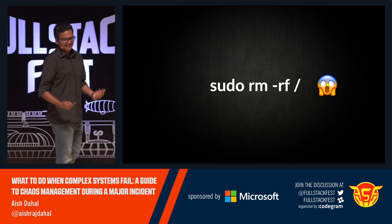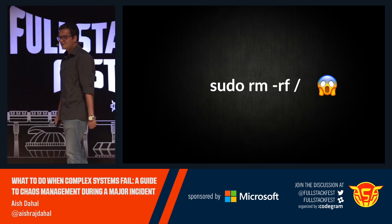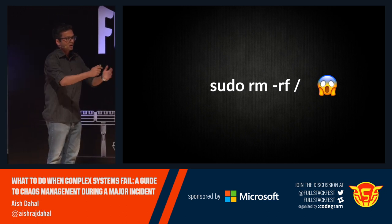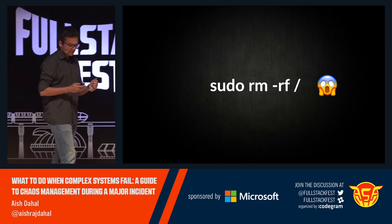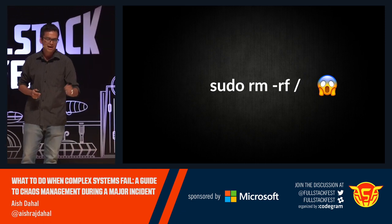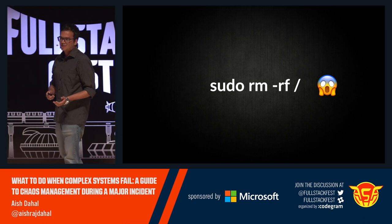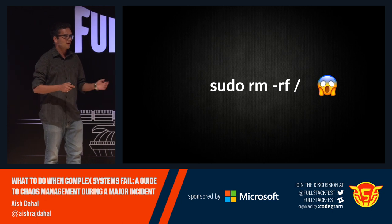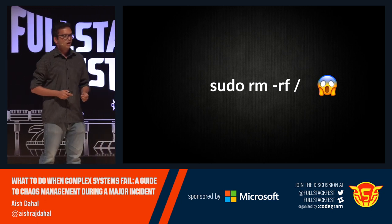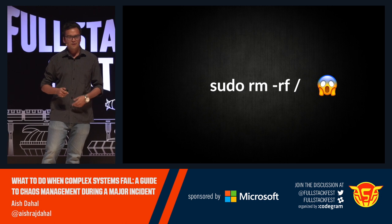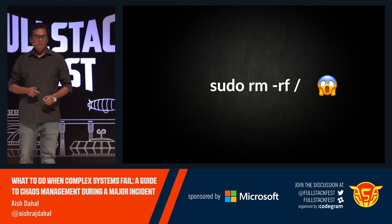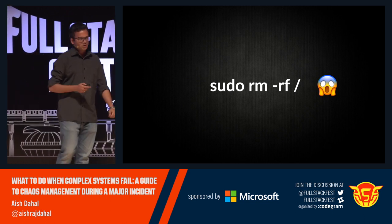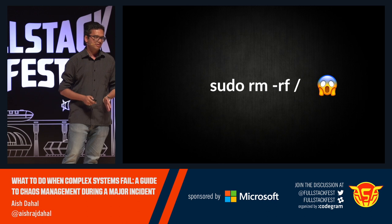Unfortunately, some of us, like myself, tend to make this mistake — which means that in a production system, we believe it's a non-prod box or just make this one-off mistake and run a command like this. The consequence can be something between an hours-long outage involving millions of dollars' worth of customer impact, to something like restarting a box or failing over to another AWS availability zone. Today's talk is about what happens right after you run this command — what happens when your complex system fails.